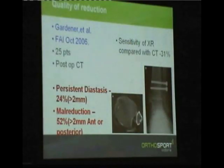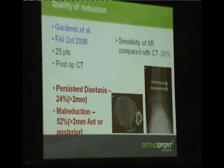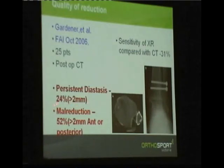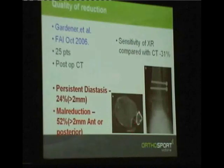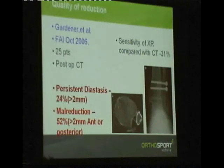How do we go at actually reducing the syndesmosis? CT scan studies following fixation show results that are not great — persistent diastasis in 24% and mal-reduction in 52%, with the fibula either more anterior, posterior, or rotated. X-rays were poor at showing this, so a CT scan really tells you the story.